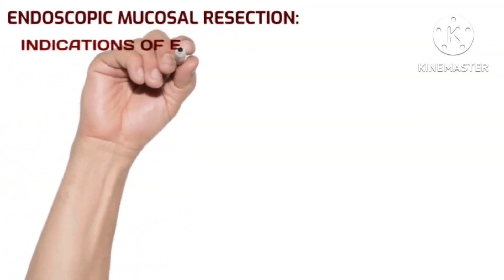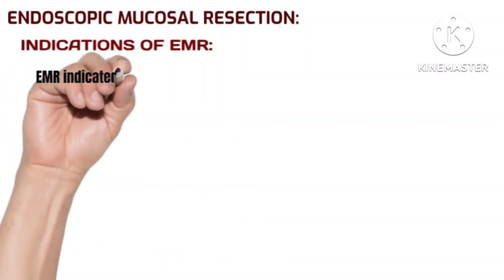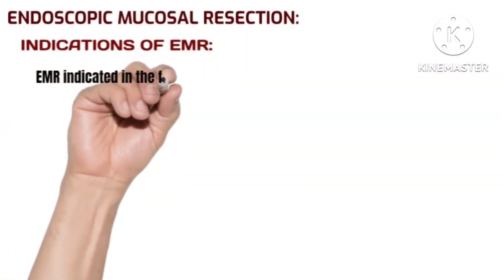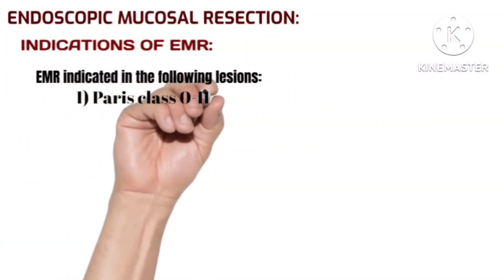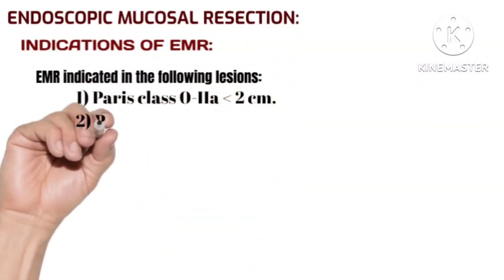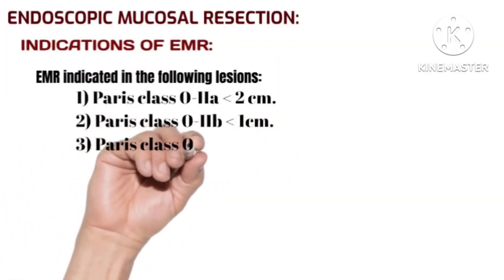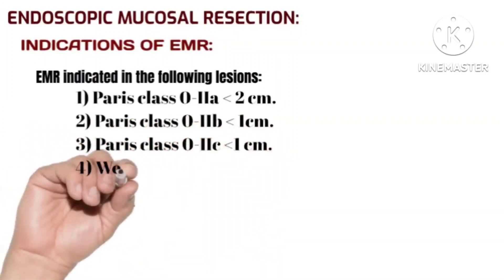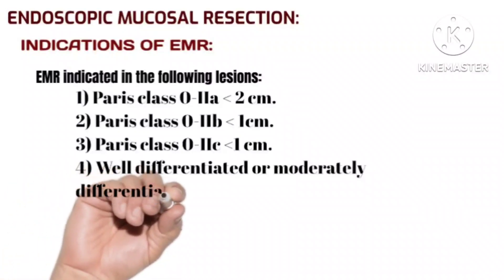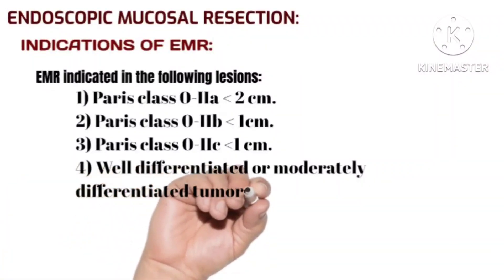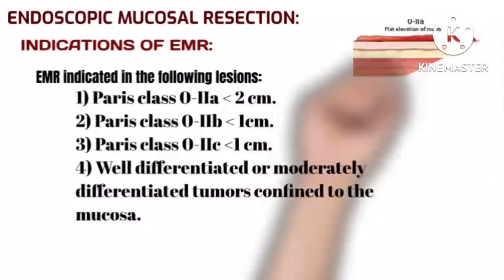Endoscopic mucosal resection is indicated in the following lesions: Paris class 0-IIa less than 2 cm, Paris class 0-IIb less than 1 cm, and Paris class 0-IIc less than 1 cm with well-differentiated or moderately differentiated tumors confined to the mucosa.